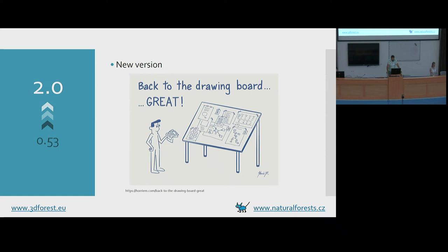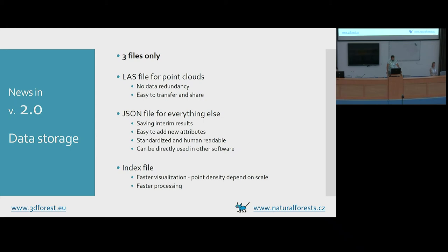So we went back to the drawing board and decided to do better. The new architecture is completely different. We use LAS files for point clouds, which is probably the best choice since LAS is the golden standard exchange format — no redundancy, easy to transfer and share. We use JSON files for anything else, which is a standardized, human-readable file format that can be used in other software. We use an index file for indexing the point clouds for faster visualization and faster processing.